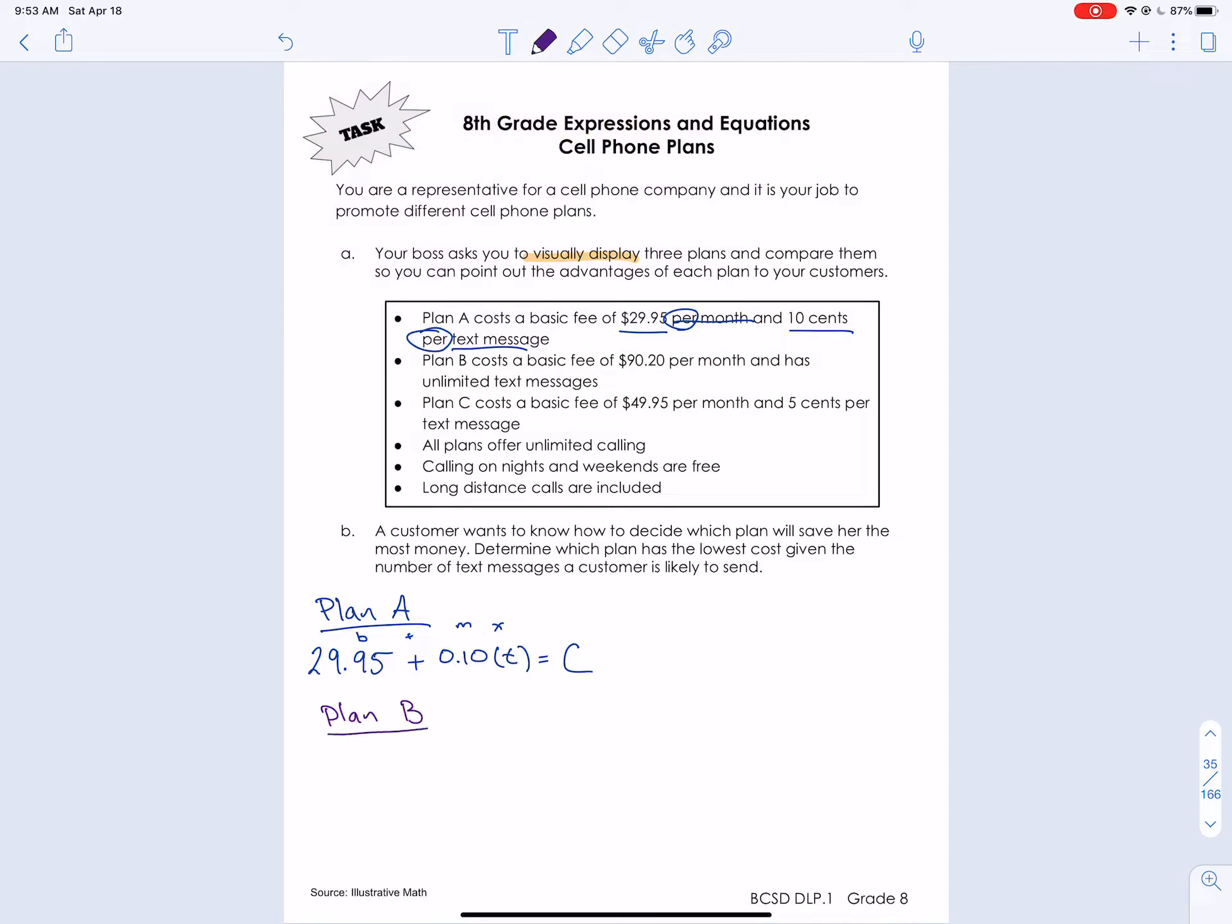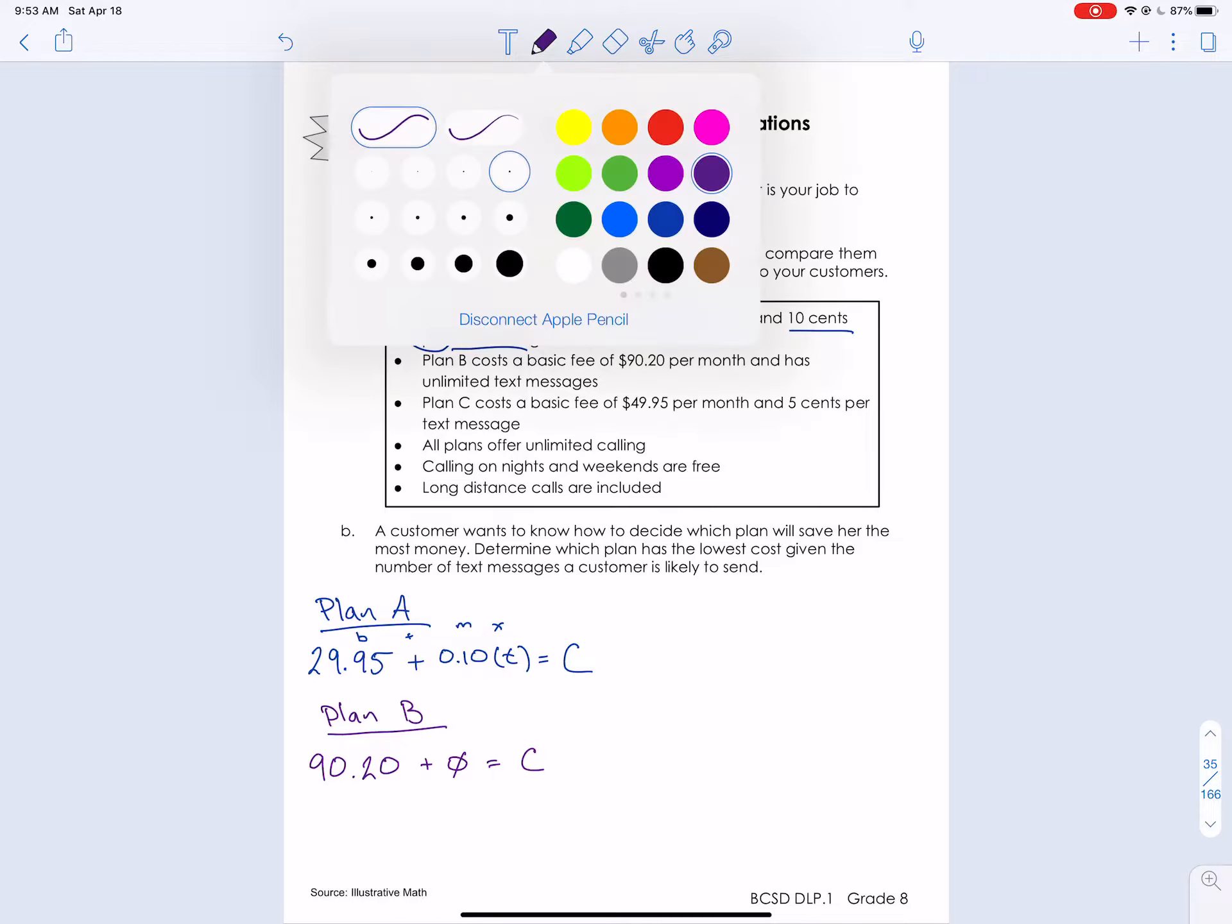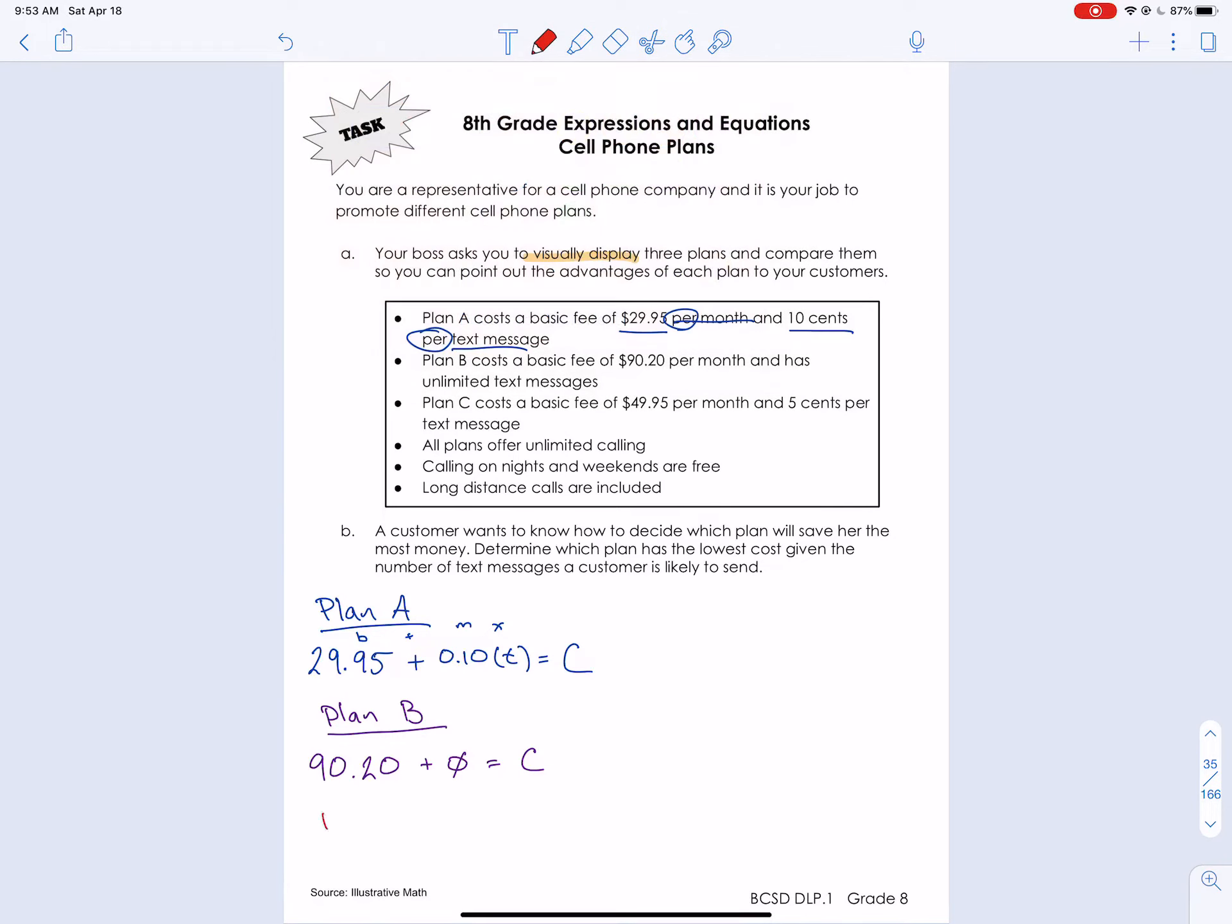Remember, we're only looking at one month. So let's ignore that one and let's think about how much it costs just for that one month. So plan A is going to be $29.95 plus $0.10 per text message, times how many text messages they're going to use. So there's our equation. So this is our slope, M, X plus B. We just wrote it in the opposite order, which is fine. Plan B, we have a basic fee of $90.20, but unlimited text messages. So that means there's no extra cost. We don't have to pay anything extra for text.